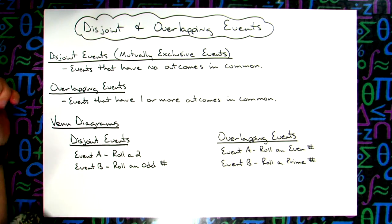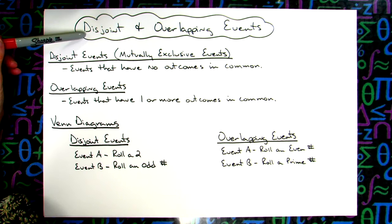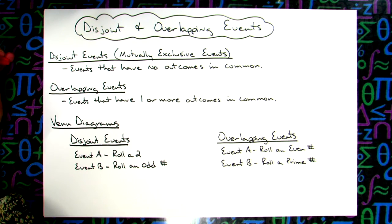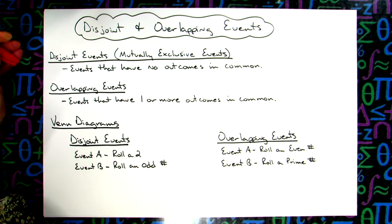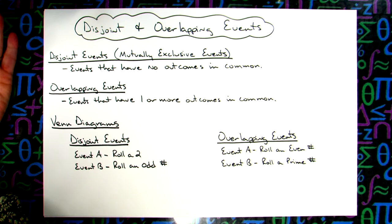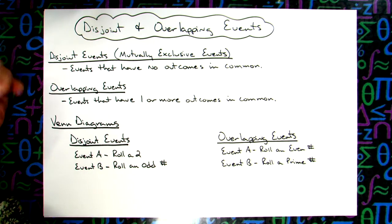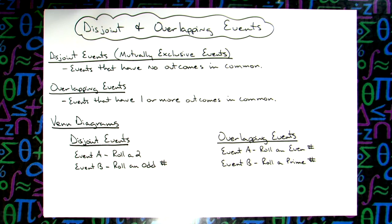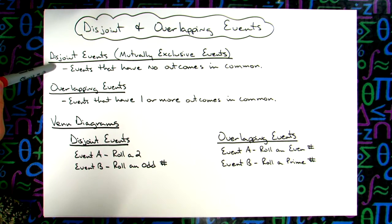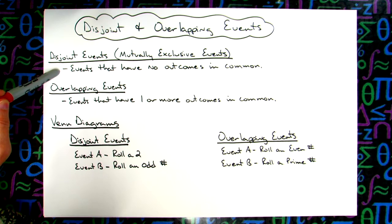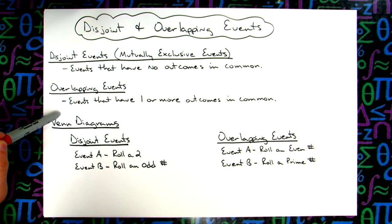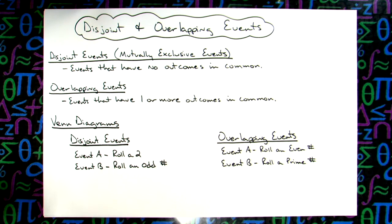In this video we're going to take a quick look at the difference between disjoint and overlapping events. This is necessary to know if you're dealing with probabilities and you've got different events going on. You've got to know whether they are mutually exclusive or whether they're overlapping. Disjoint events have no outcomes in common at all, and overlapping ones have at least one or more outcomes that are in common.